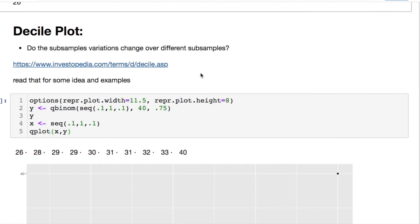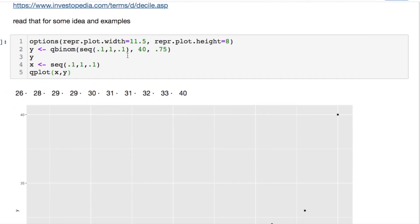You're evaluating do the subsample variations change over different subsamples. What the hell does that mean? Let's take the thing from above. Let's assume that we were looking at those 40 people with a 75 percent chance of not having decorum and we're going to throw them in the lower 10th quantile or you could say first decile.